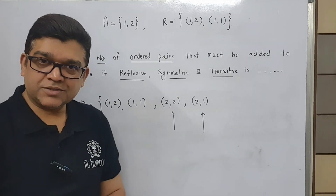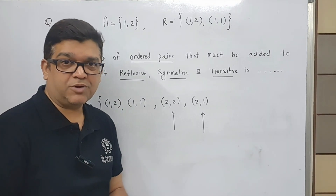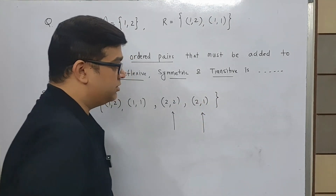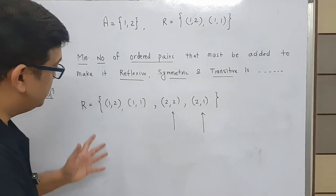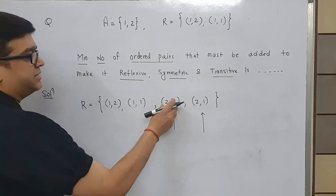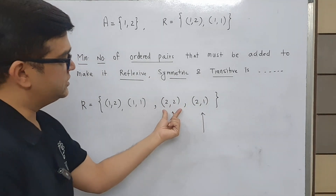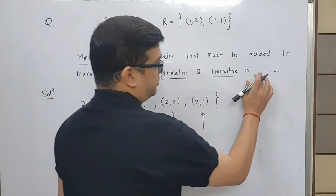Now whether it is transitive or not — I want you to check yourself and write in the comment box. Pause for a moment and check. As you can check, this is transitive also. So how many minimum ordered pairs had to be added? Two — (2,2) and (2,1). So the minimum number of ordered pairs is two. Friends, that's all for today's video. Hope you liked the video — please share with your friends. If you want me to put up another video discussing various interesting and difficult questions on transitive relations, you can write in the comment box. Till then, bye-bye and take very good care of yourself.